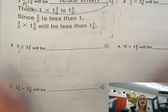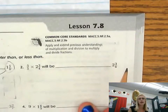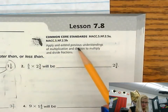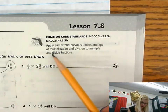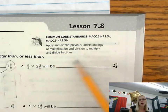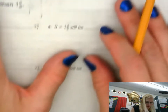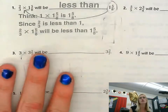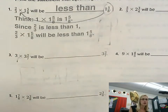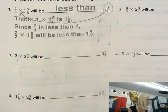We're going to be going over lesson 7.8 homework. The goal says to apply and extend our previous understanding of multiplication and division to apply multiplication of fractions. Today we're going to be not solving the multiplication, but assessing whether the product is going to be less than or greater than a comparable number.